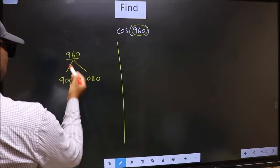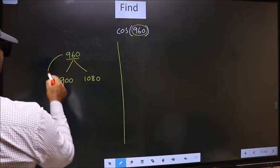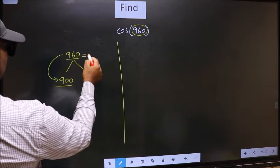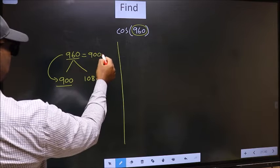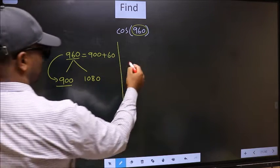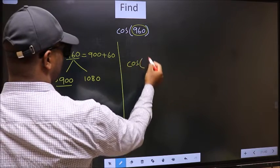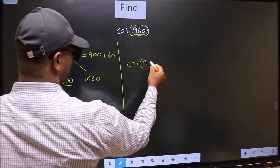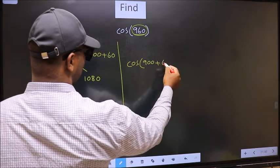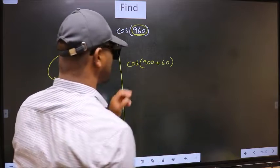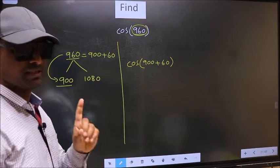Next, 960 is close to which number? This is close to 900. So in place of this, now we should write 900 plus 60. So this will become cos 900 plus 60. This is your step 1.